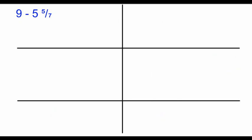Okay, here's our next problem. We have 9 minus 5 and 5 sevenths. It's going to be kind of hard to subtract 9 minus 5 and 5 sevenths because we don't have 2 fractions. We have 2 whole numbers, but we're missing a fraction in this number. We're going to rename 9 to have a fraction.